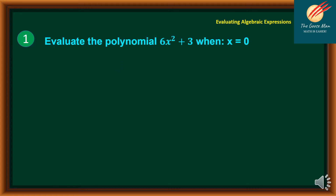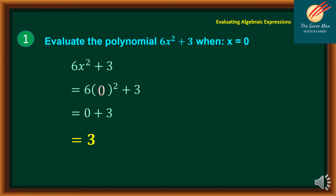Let us consider the next example. Evaluate the polynomial 6x² + 3 when x is equal to 0. First, write down the given expression. Then replace the variable x with open and close parentheses. Plug in the given value: x equals 0. Simplify: 0 squared gives us 0, times 6 is 0, plus 3 equals 3. Therefore, 6x² + 3 when x equals 0 is equal to 3.